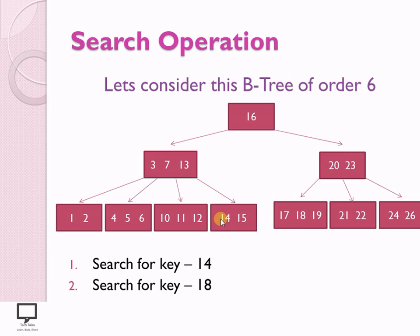Next, let's search for 18. I compare 18 with the root 16: not equal but greater, so I move to the right subtree. I compare 18 with 20: not equal, and 18 is less than 20, so I move to the left child of that node. I compare 18 with the first key value of that node: not equal. I move to the next key value. I compare 18 with 18: they are equal — search is successful, and I exit.